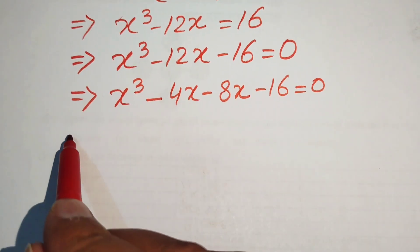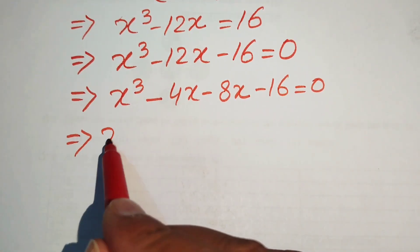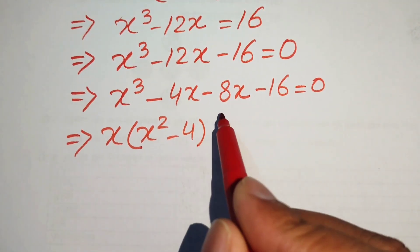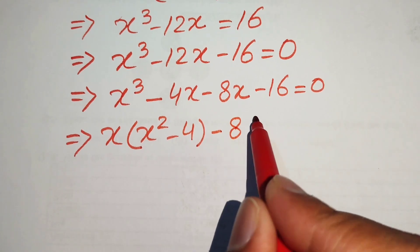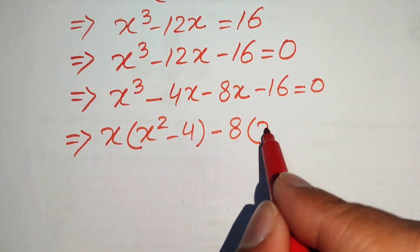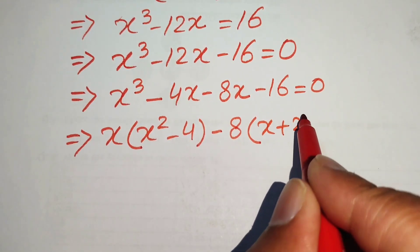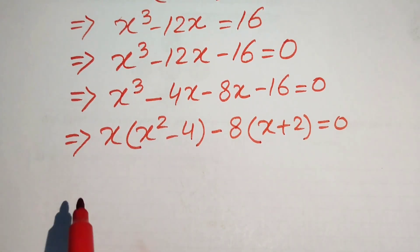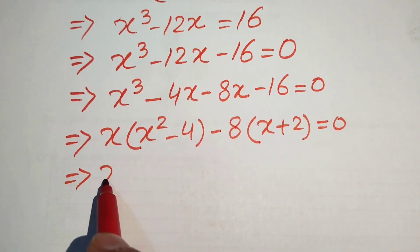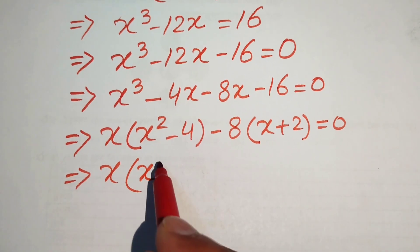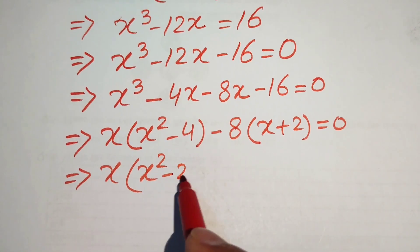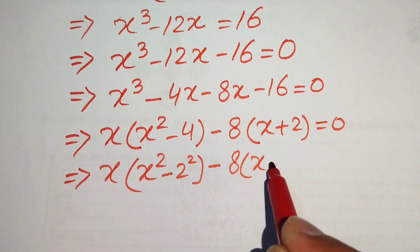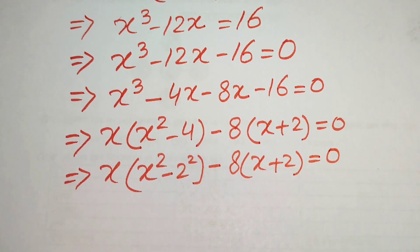Focusing on the first two terms, the common factor is x, leaving x squared minus 4. From the last two terms we take out minus 8, leaving x plus 2. Rewriting: x(x squared minus 4) minus 8(x plus 2) equals 0. We write 4 as 2 squared: x(x squared minus 2 squared) minus 8(x plus 2) equals 0.